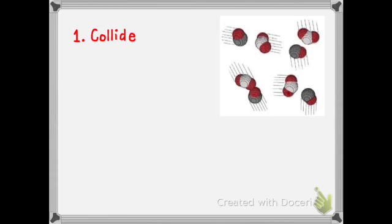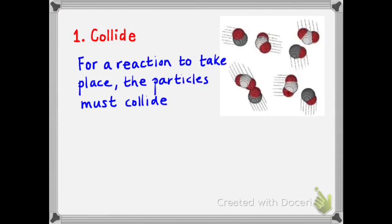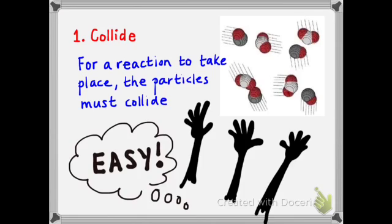Firstly, the particles must collide. That's relatively straightforward — for a reaction to take place, the particles must collide. Unless particles actually bump into each other, we can't have breaking of bonds and forming of new bonds, and thus a reaction can't take place. So the first premise of the collision theory is that particles must collide.